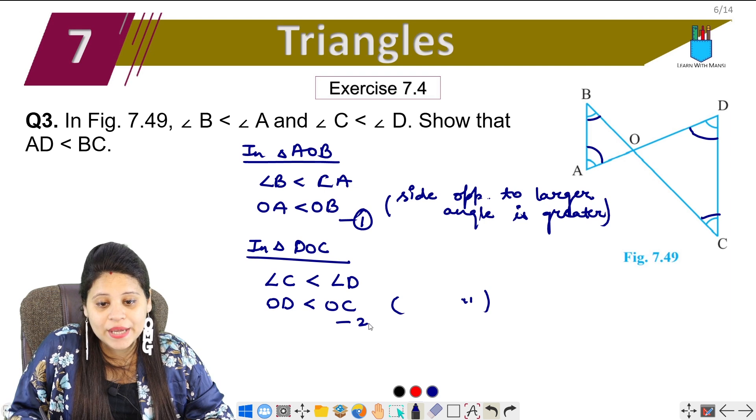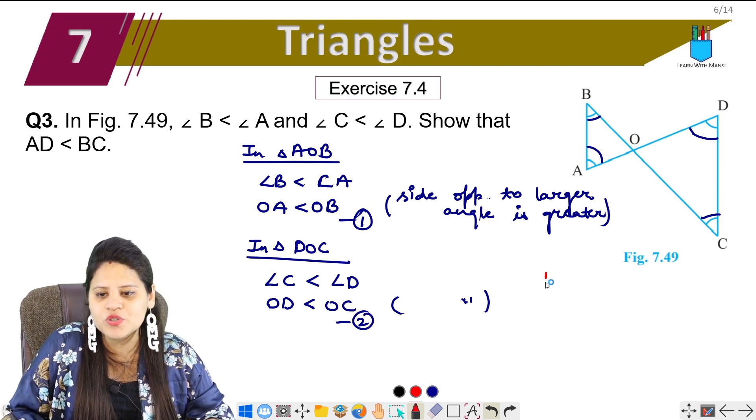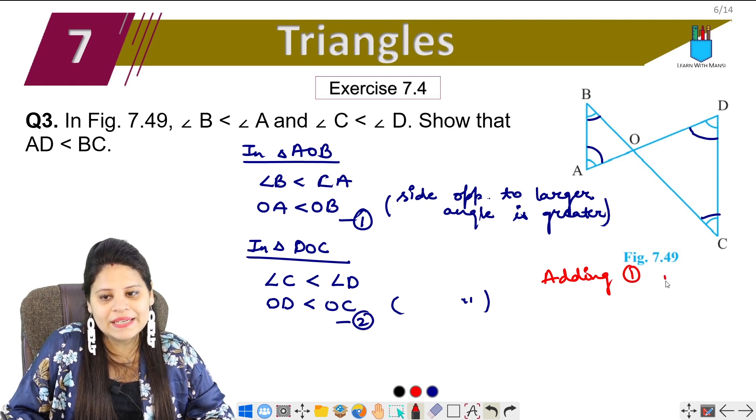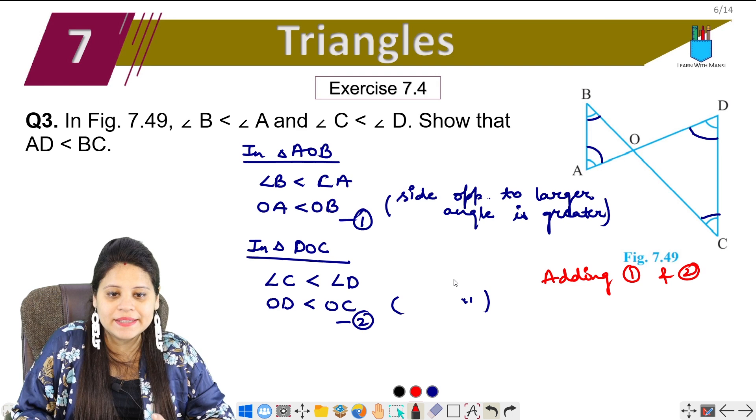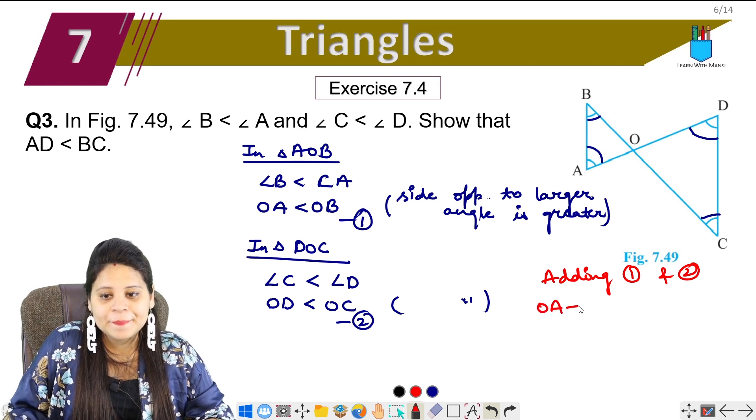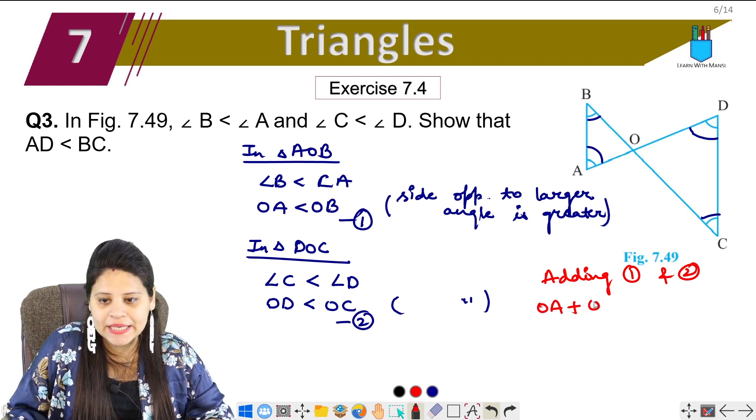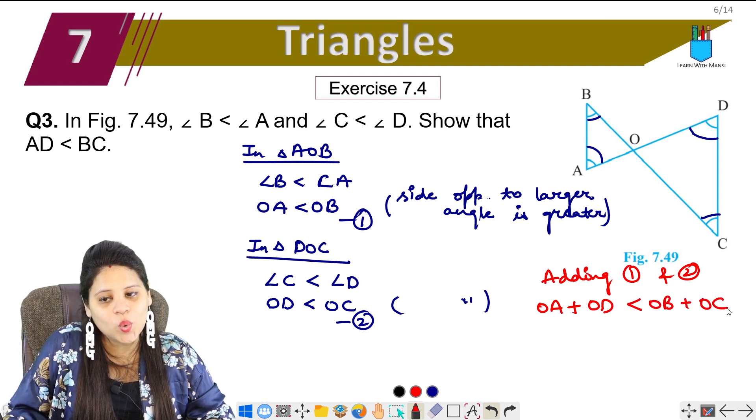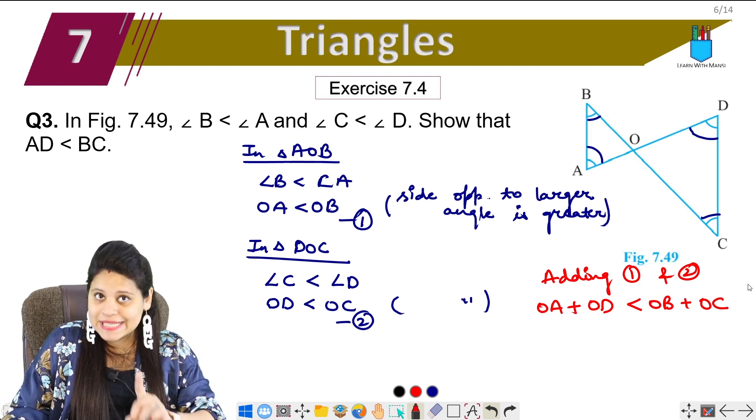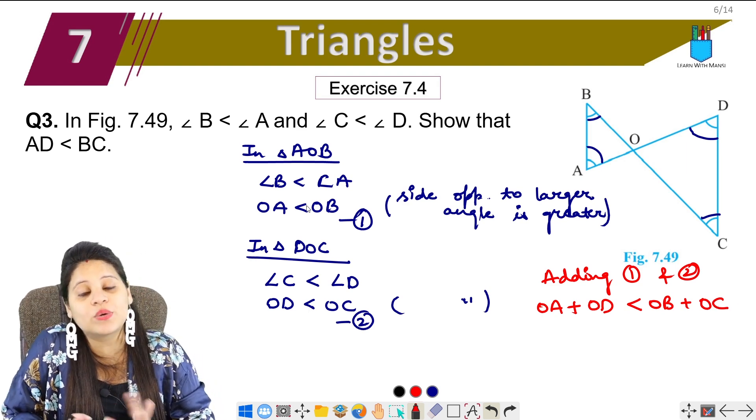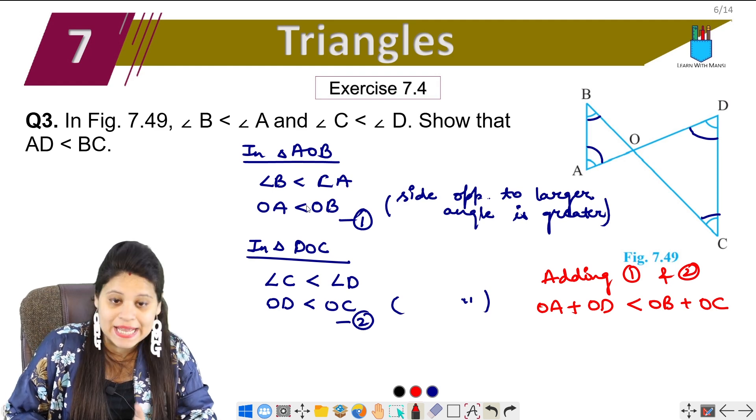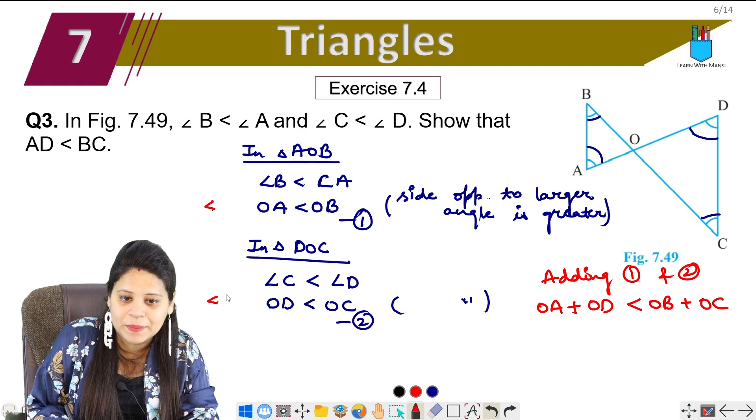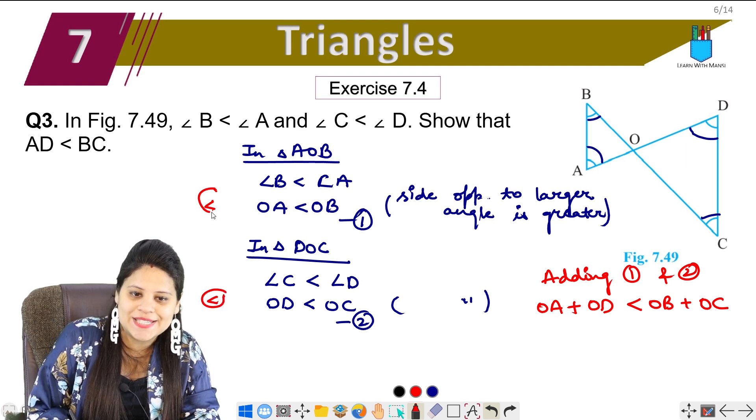Now this is our second. Here we have to do the question. Adding 1 and 2, first and second equation. See, OA plus OD smaller is OB plus OC. Okay? When you add it, you have to make sure that if this is the same here, then it should be the same here. Clear?